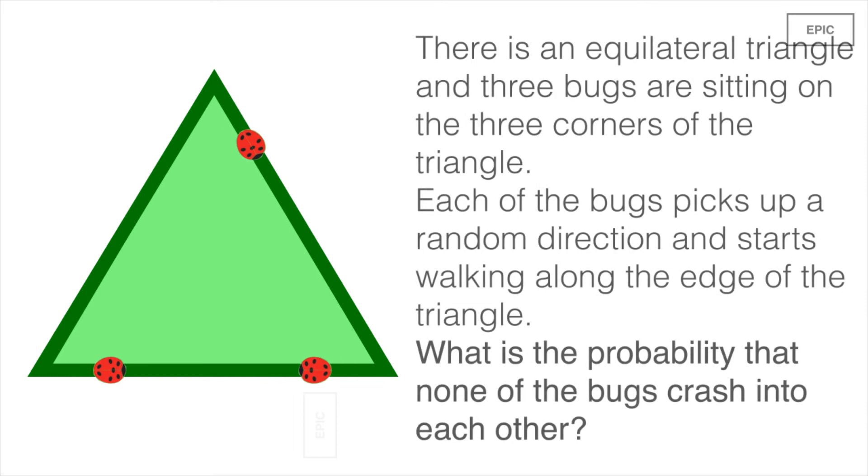There is an equilateral triangle and three bugs are sitting on the three corners of the triangle. Each of the bugs picks up a random direction and starts walking along the edge of the equilateral triangle. What is the probability that none of the bugs crash into each other?